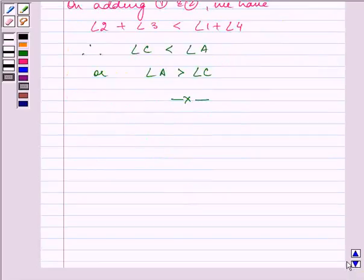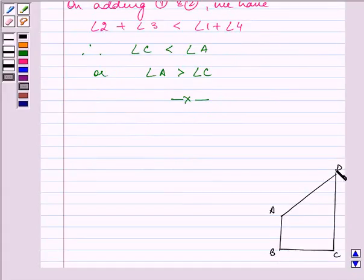Proceeding on with the question again, let us draw the diagram once again. Now, let us join BD and let us name it as 5, 6, 7 and 8.